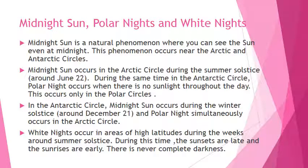Midnight Sun, Polar Nights and White Nights. Midnight Sun is the natural phenomenon where you can see the Sun even at midnight. This phenomenon occurs near the Arctic and Antarctic circles. Midnight Sun occurs in the Arctic circle during the summer solstice.